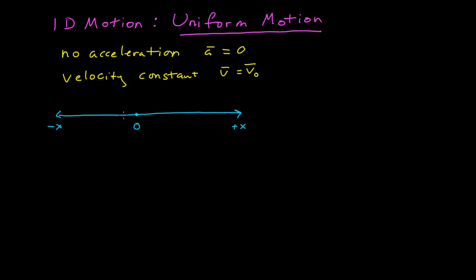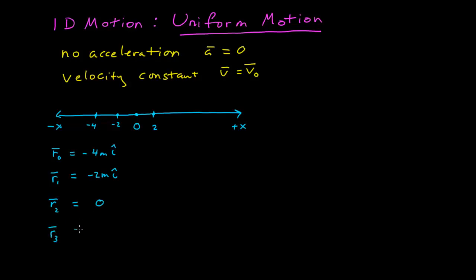Let's consider a particle that starts out at position negative 4 on the x-axis, then goes to negative 2, then to 0, then to positive 2. There are position vectors that describe each of these points. My initial position vector was equal to negative 4 meters i-hat. My position vector at r1 is negative 2 meters i-hat. My position vector at r2 is just 0. My position vector at r3 is 2 meters i-hat.